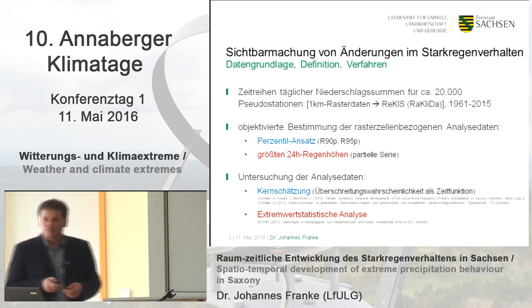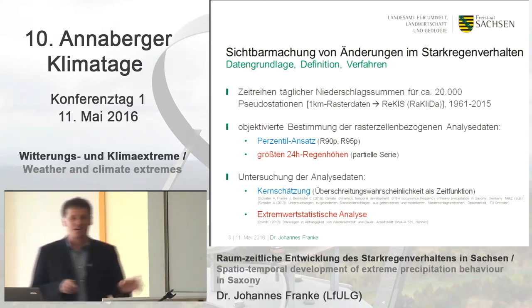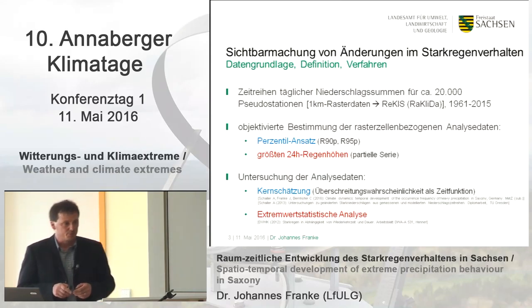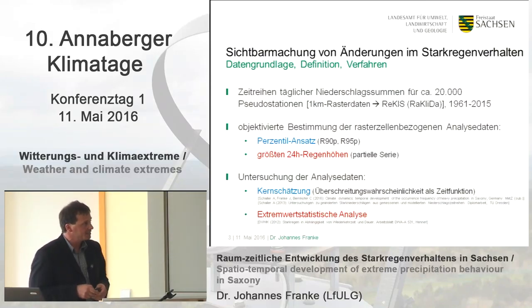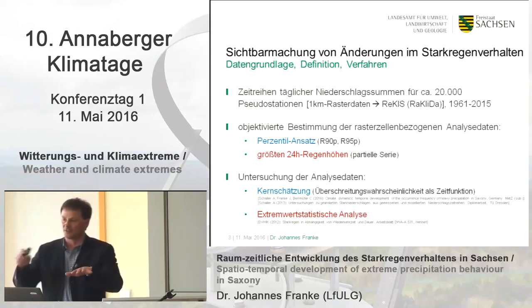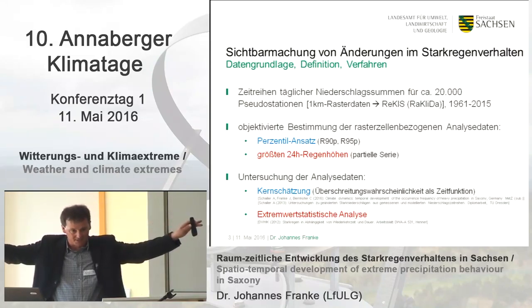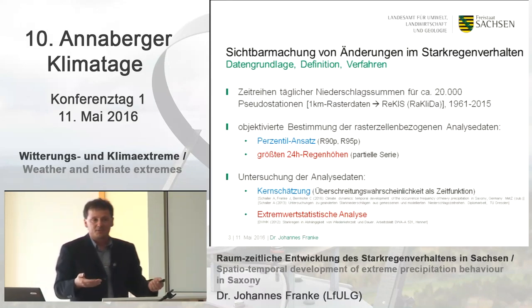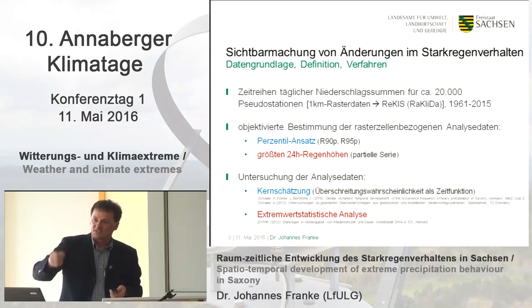So we are talking now about the database definition and methods. The database is a time series of 20,000 pseudo stations — so we use grids here, daily grids, fields — covering the whole state of Saxony, in the time period between 1961 to 2015. These daily precipitation fields were interpolated with a tool from WACIS. For every day from 1961 to 2015, we put a layer on top of each other, so you can see the grid cells, extract the time series from it, analyze the time series, and when you print out the results, you have a spatial distribution.